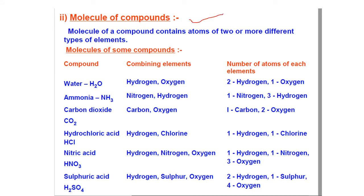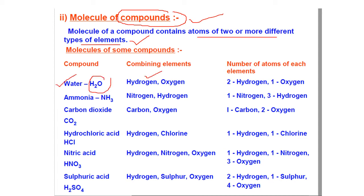Now, molecules of compounds. The molecule of a compound contains atoms of two or more different types of elements. In the previous case, molecules of elements comprised the same type of element, but here there will be two different types of elements forming a compound. For example, water has the formula H2O — H is different and O is different, so two hydrogen and one oxygen form water. In ammonia, there is one nitrogen and three hydrogen — NH3. When two different atoms join together to form a compound, this is called a molecule of a compound.